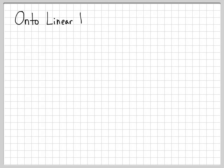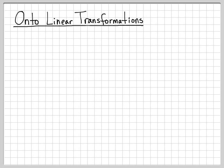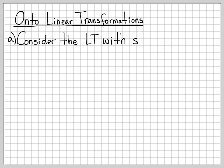In the previous video, we looked at linear transformations to determine if they are one-to-one. In this video, we look at linear transformations and determine if they are onto. The word 'onto' is another property that a linear transformation can have or not have.